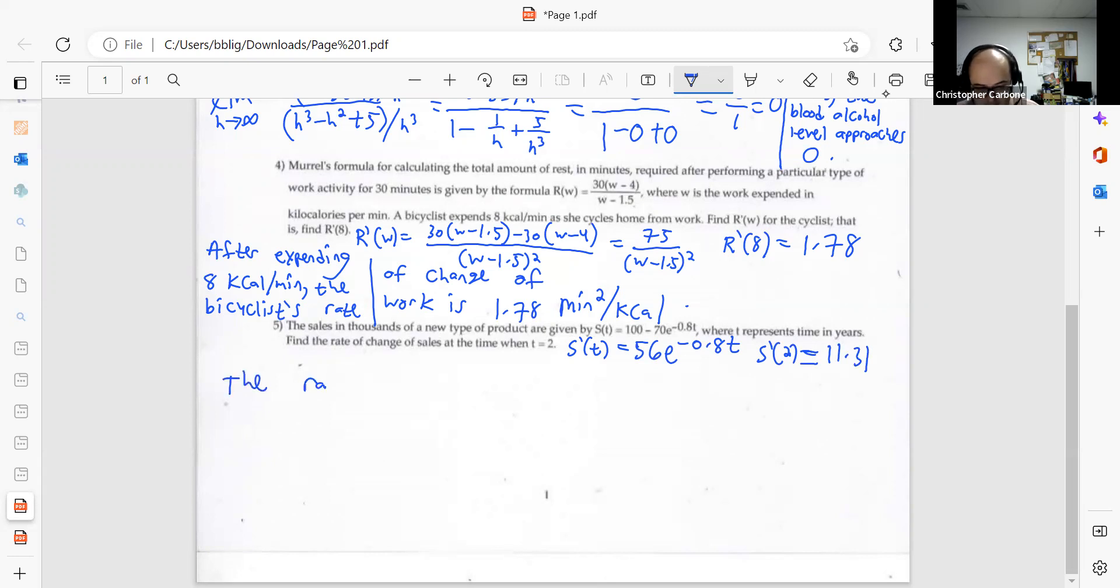The rate of change of sales after 2 years is 11.31 thousand, so 11,310 products. That's for number 5.